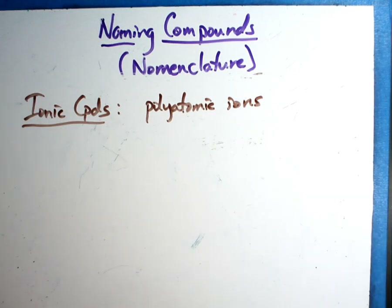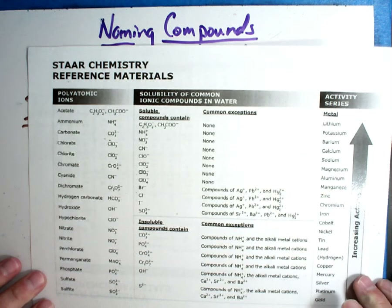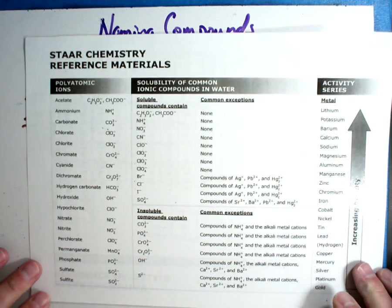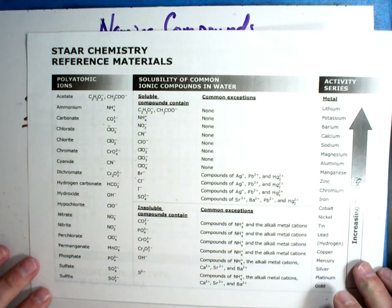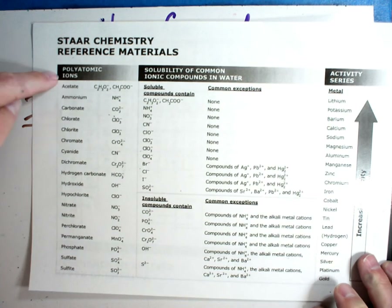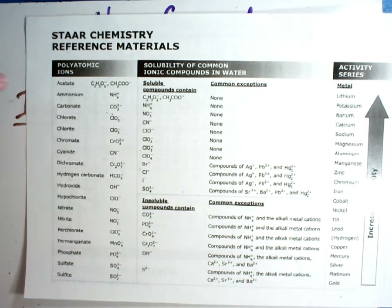Polyatomic ions. They can be hard for you, so you've got to be very careful. I'm going to show you how the star chart does it for the EOC. Polyatomic ions — it prints these out for you.